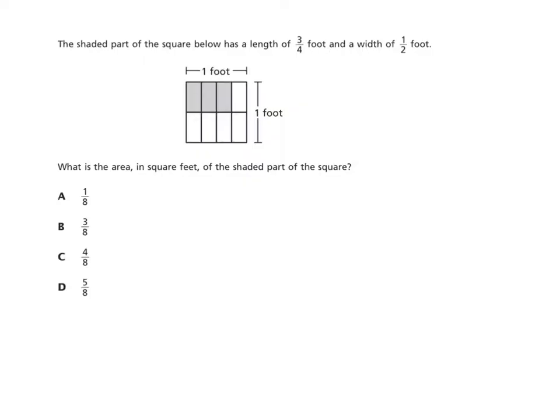Let's look at the first one. The shaded part of the square below has a length of 3 fourths foot and a width of 1 half foot. What is the area in square feet of the shaded part of the square? This is an area model very much like what we've done in the modules and typically we would make it look more like this and we'd have 3 fourths, at least this is how we do it in my classroom, 3 fourths and we have it times 1 half.